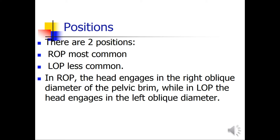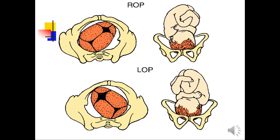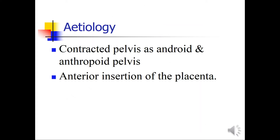There are two positions: right occipital posterior, which is most common, and left occipital posterior, which is less common. In right occipital posterior, the head engages in the right oblique diameter of the pelvic brim, while in left occipital posterior, the head engages in the left oblique diameter.